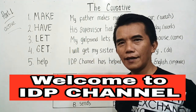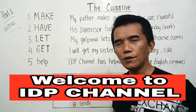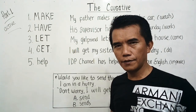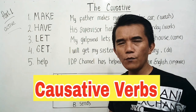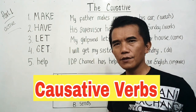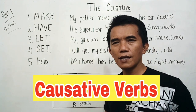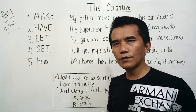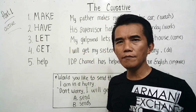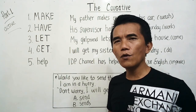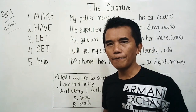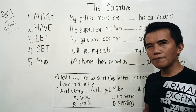Hi everyone, my name is Idp. In this video we will be talking about the causative verbs. What are causative verbs? When we use a causative verb in a sentence, it means we cause someone to do something. It could be we persuade them, we ask them, we request them to do something, or we let something happen. Later on you will know in detail.